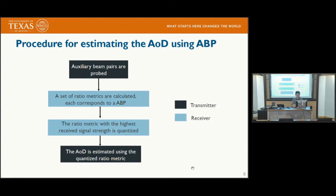The general procedure for the beam pair approach is as follows: first, the base station forms beam pairs; after the receiver receives those beam pairs, a set of ratio metrics is calculated for each beam pair; the ratio metric with the highest received signal power is quantized and fed back to the base station; and finally, the base station inverts the ratio metric to retrieve the AOD estimate.